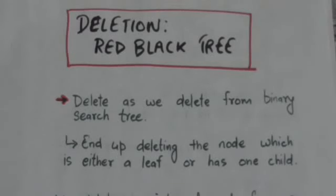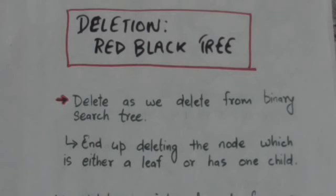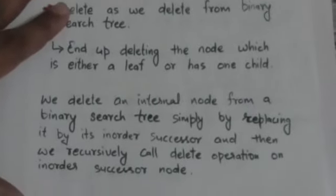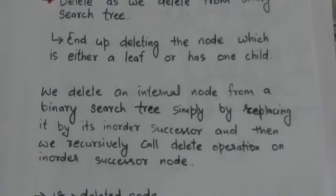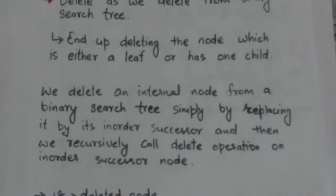Welcome back. In this tutorial we will study deletion in a red-black tree. To delete a node from a red-black tree, we delete it as we delete from a binary search tree. When we delete a node from a BST, we always end up deleting a node which is either a leaf or has only one child, since an internal node is replaced by its in-order successor and delete is called recursively on that successor.